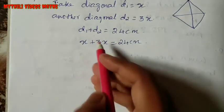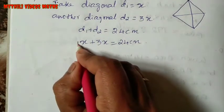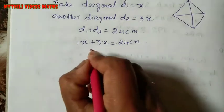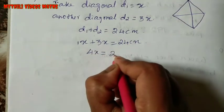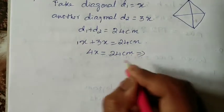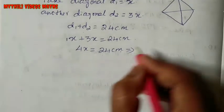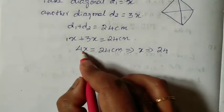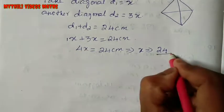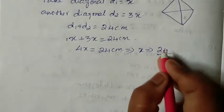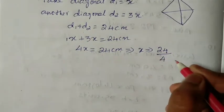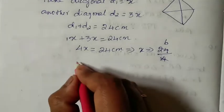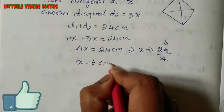Now we have to add both. X plus 3X — taking 1X — so 3 plus 1 means 4X. Therefore, 4X equal to 24 cm. From this we have to find the X value. So X equal to 24 divided by 4, which gives X equal to 6 cm.